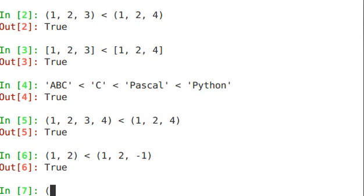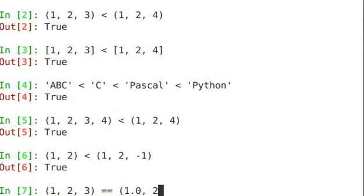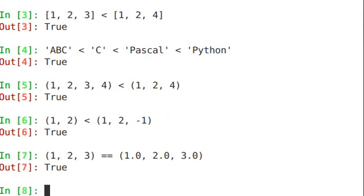Here's another tuple: (1, 2, 3) equals (1.0, 2.0, 3.0). These comparisons will be performed numerically, and in this case it is exactly equal — 1.0 equals 1.